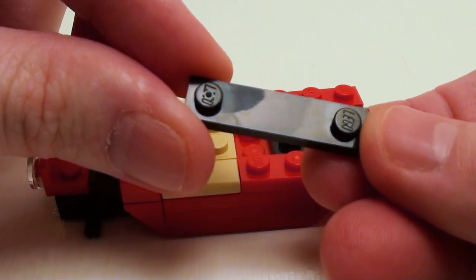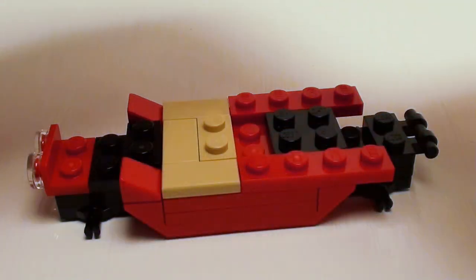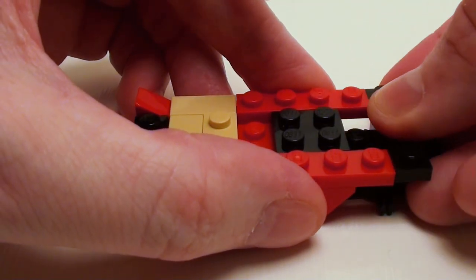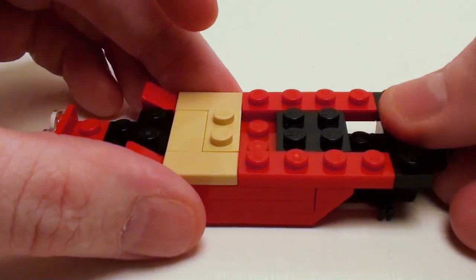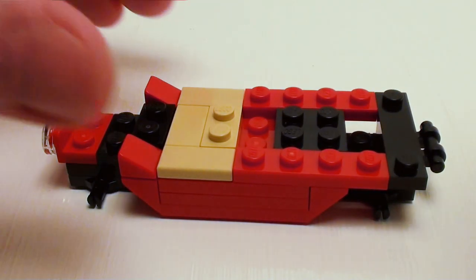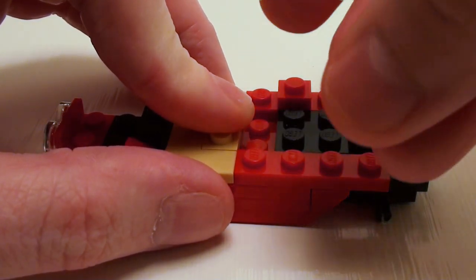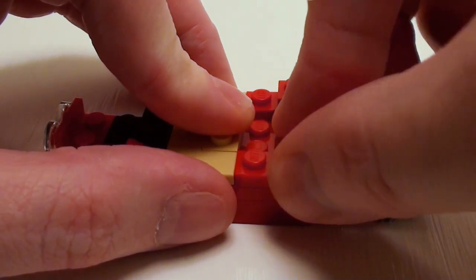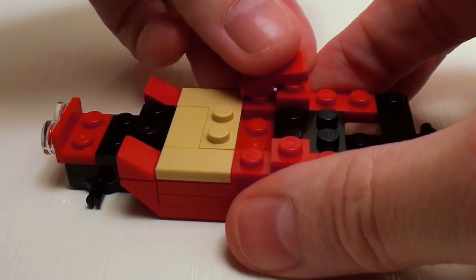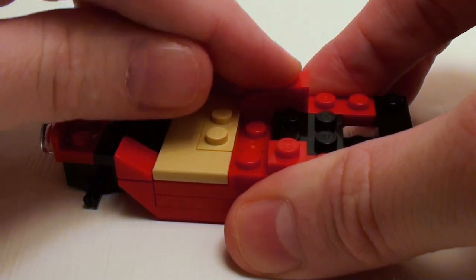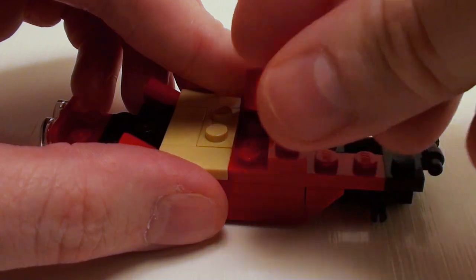And in the back, I'm going to take a 1 by 4 plate with only two studs. Set this right here. Now we're going to continue on with the back portion with a set of 1 by 1 plates and a set of 1 by 2 by 2 thirds plate with bow.